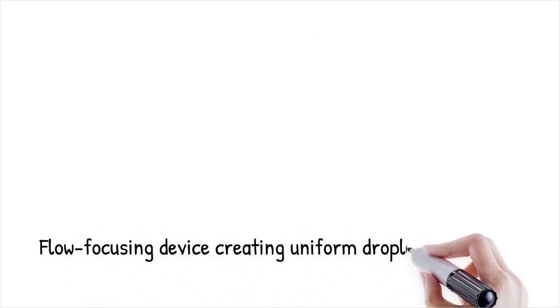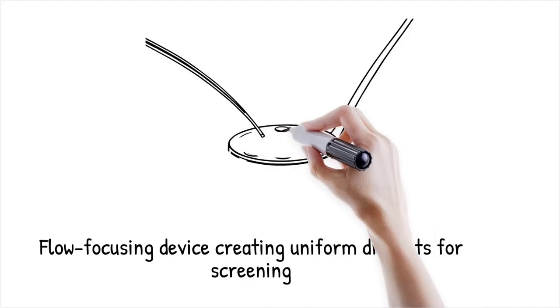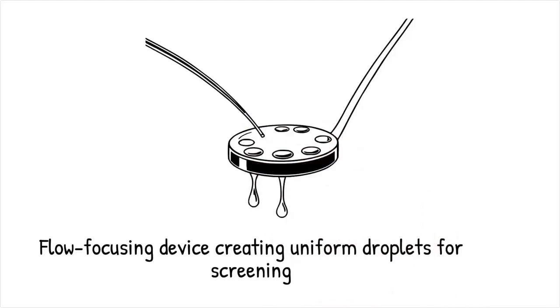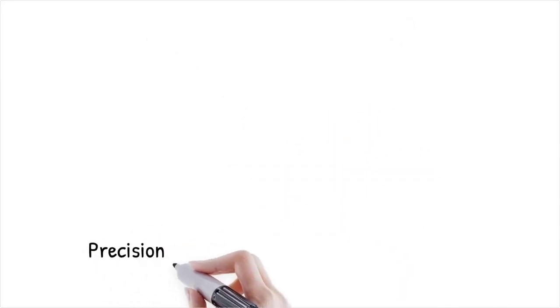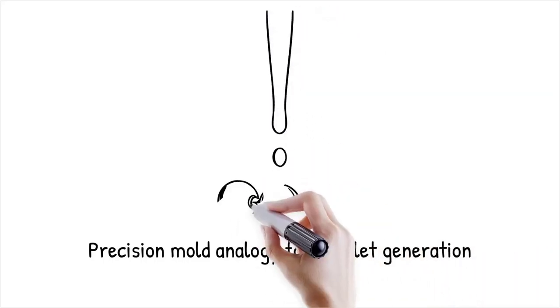In a flow-focusing device, adjusting the flow rate ratio yields droplets with uniform sizes ideal for high-throughput screening. Generating droplets is like using a precision mold to create identical beads from molten glass.